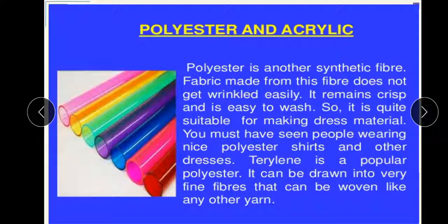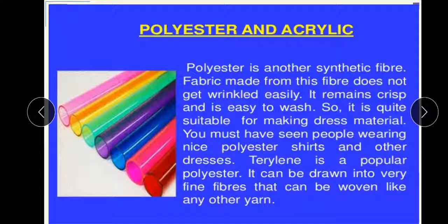Polyester is another synthetic fiber. Fabric made from this fiber does not get wrinkled easily. It remains crisp and is easy to wash, so it is quite suitable for making dress materials. You must have seen people wearing nice polyester shirts and other dresses. Terylene is a popular polyester. It can be drawn into very fine fibers that can be woven like any other yarn.